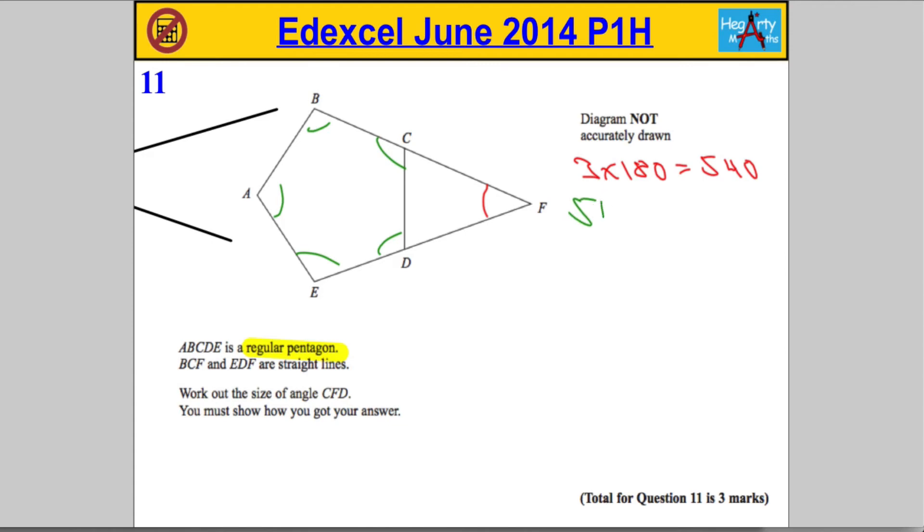So 540 divided by 5 is going to be equal to 108 degrees. So each of these angles is 108 degrees.